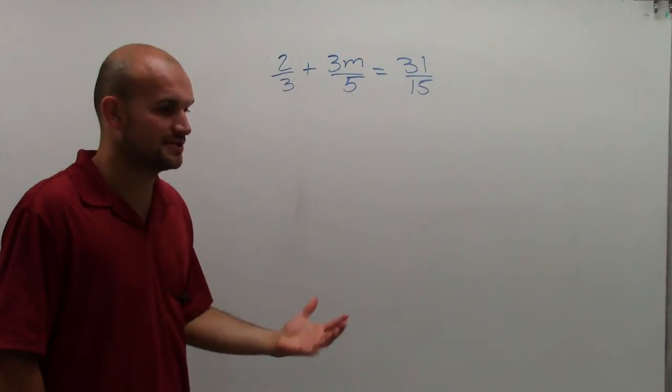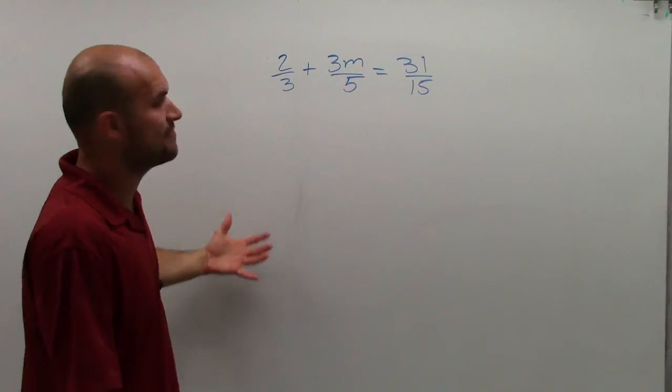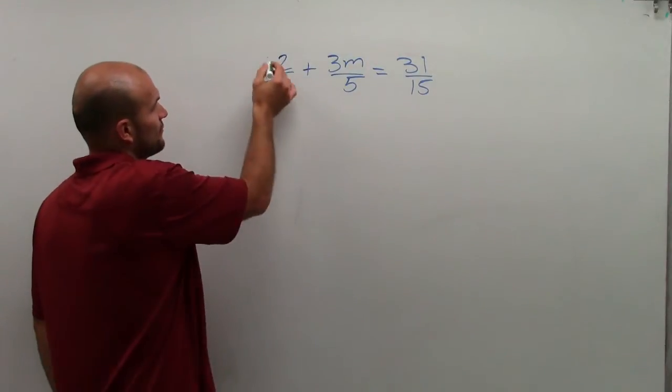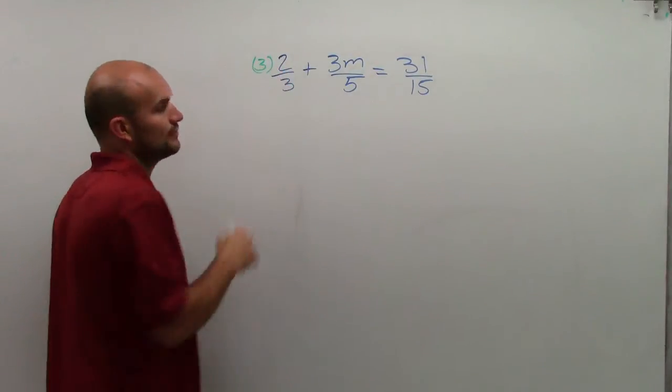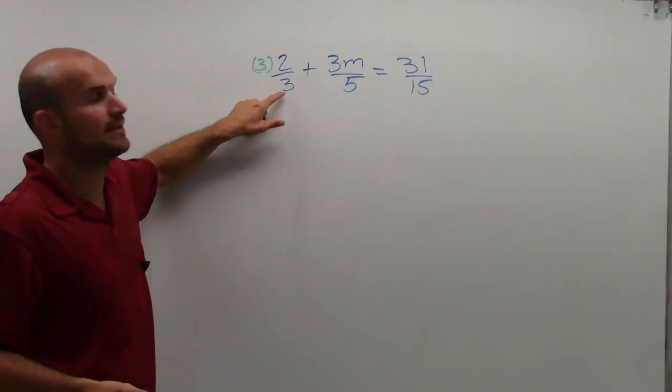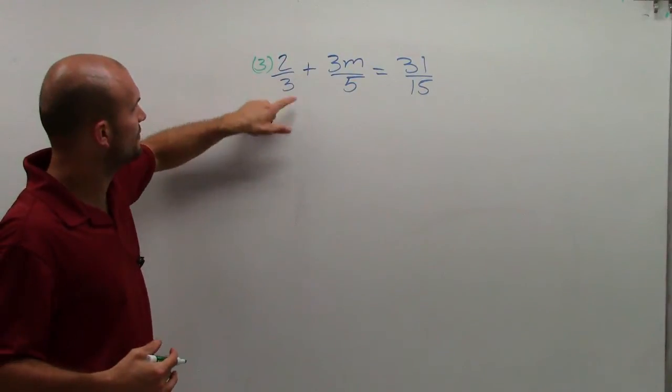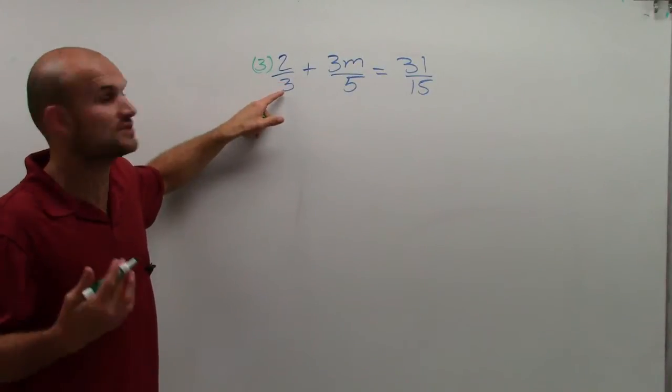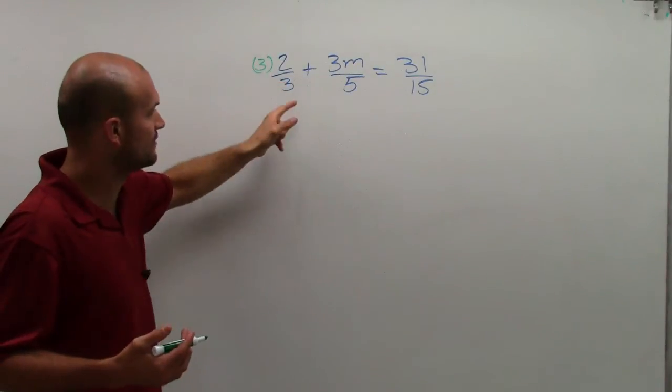So for this problem, to get rid of the fractions, you've got to think about it. Well, if I wanted to get rid of the fraction 2/3, I would have to multiply it by 3, right? Because 3 times 2 is 6, 6 divided by 3 is 2. Or you could just say 3 divided by 3 is 1, 1 times 2 is 2. So I get rid of the fraction.